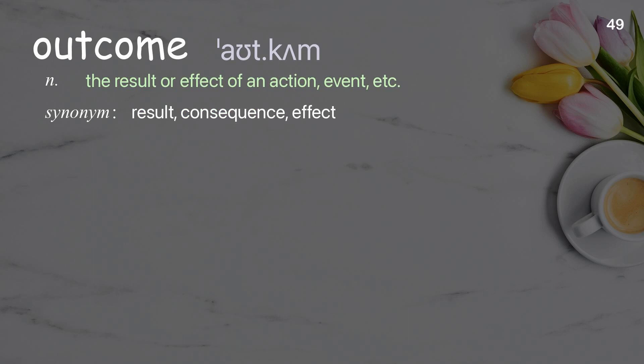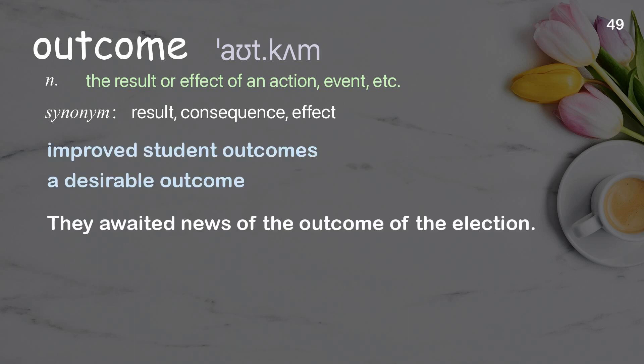Outcome: the result or effect of an action, event, etc. Examples: improved student outcomes, a desirable outcome. They awaited news of the outcome of the election.